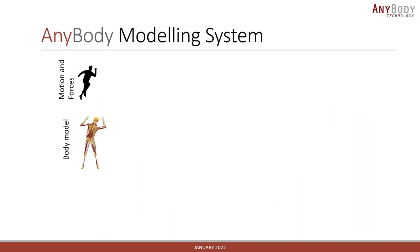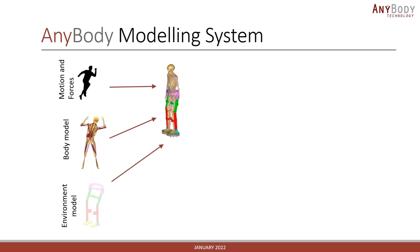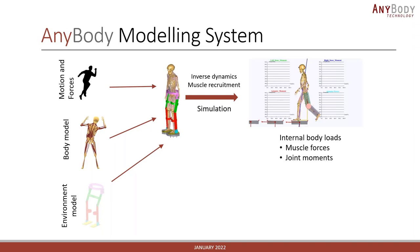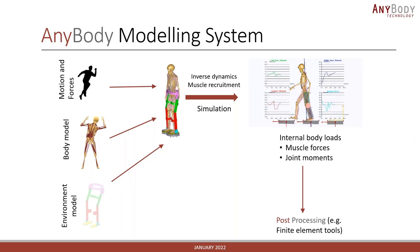The typical workflow in AnyBody looks something like this. You provide the recorded motion data as input, then use body models which you or others have built, and provide some kind of environment — which could be special equipment or an exoskeleton. You then use AnyBody to combine these and solve the muscle recruitment and run the inverse dynamics simulations, going from motion to calculate internal body loads and interaction with the environment.